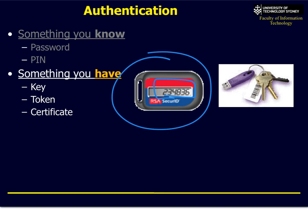It could be a token. Here's an example of a token — it's a USB key. It could be a PIN card, for example your credit card. That's a physical object that you have. You stick it in the machine and you also have a PIN code. Two-factor authentication — very useful.